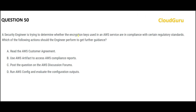Let's jump to the questions. You are using encryption keys and you want to know whether they are in compliance with your regulatory standards. You want to know: does it adhere to my industry standard or company standards? Option A says you read the customer agreement — but reading the customer agreement, how will that help you? You have to act, not just read. So option A has no action. Whenever you think about compliance and security standards, always think about Artifact and compliance reports — that is the thumb rule.